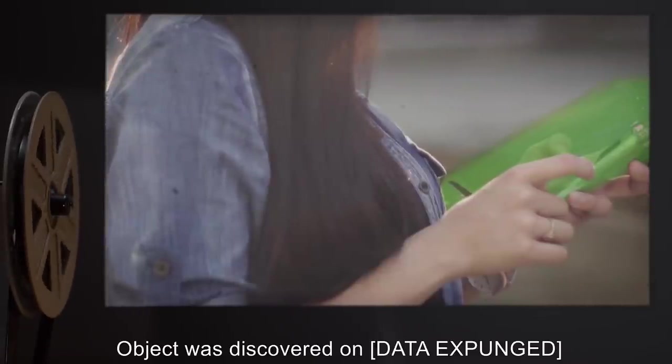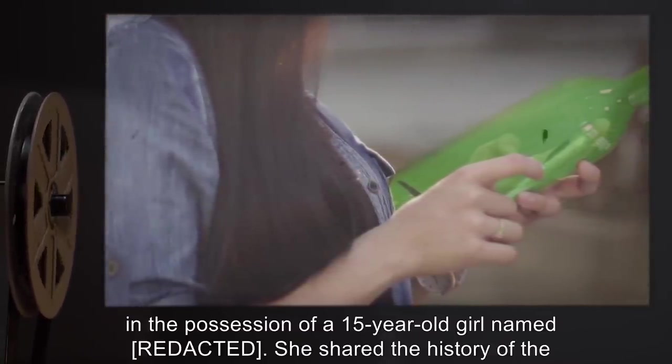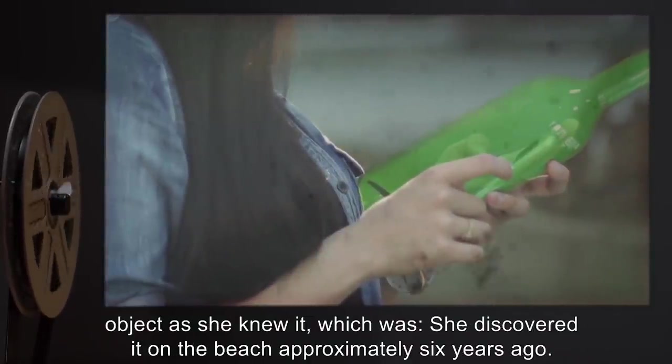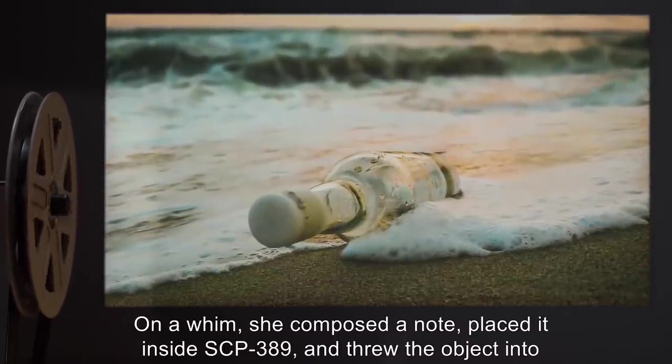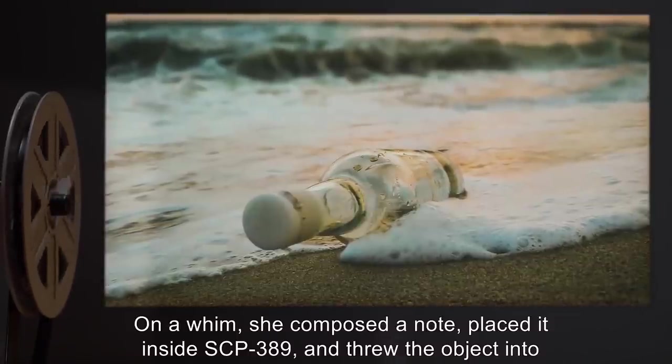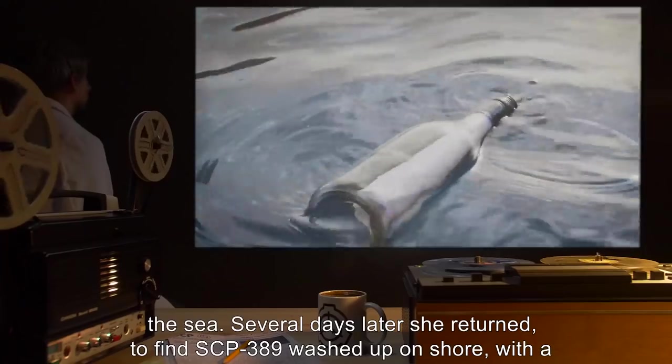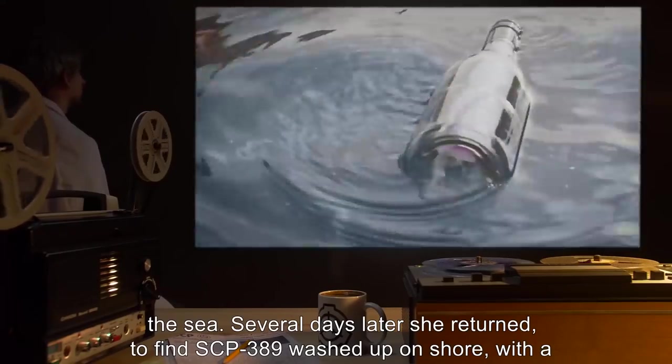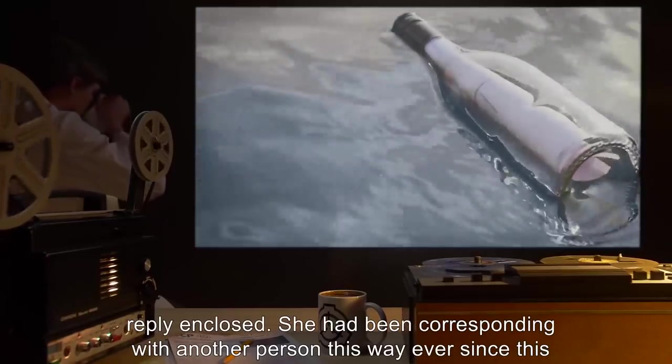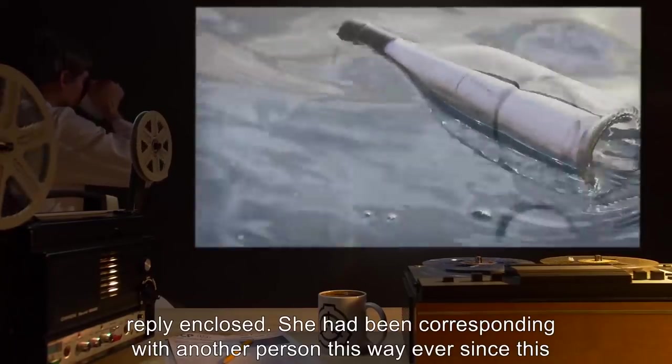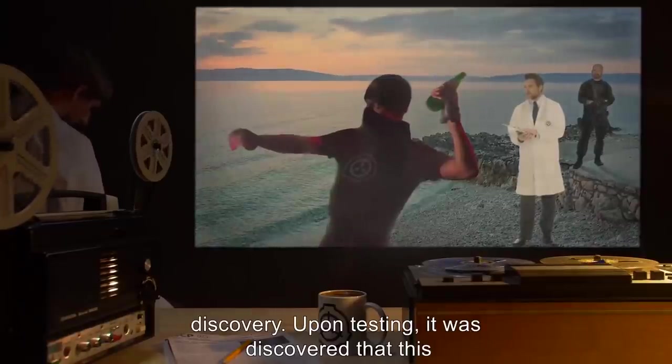Object was discovered on [DATA EXPUNGED] in the possession of a 15-year-old girl named [REDACTED]. She shared the history of the object as she knew it, which was: she discovered it on the beach approximately six years ago. On a whim, she composed a note, placed it inside SCP-389, and threw the object into the sea. Several days later, she returned to find SCP-389 washed up on shore with a reply enclosed. She had been corresponding with another person this way ever since this discovery.